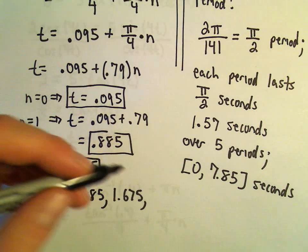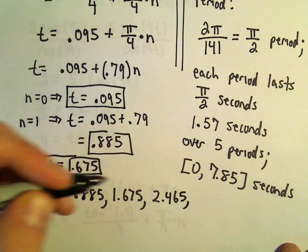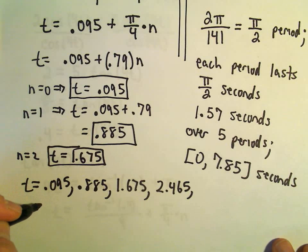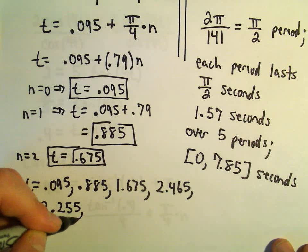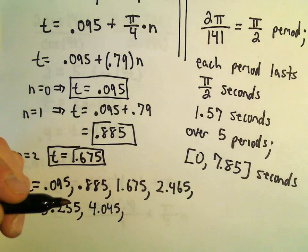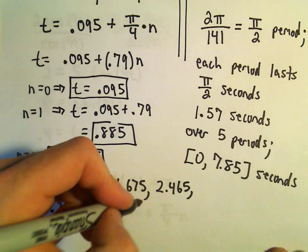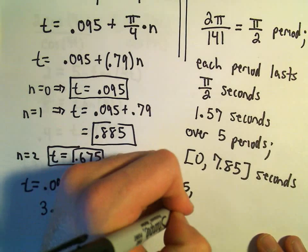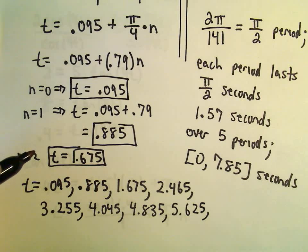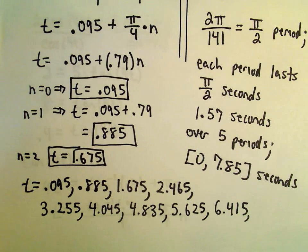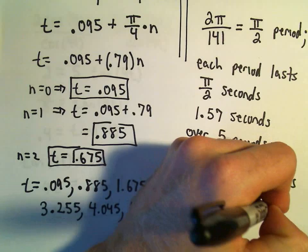So let's just start adding 0.79. I get 2.465 seconds will be another time where this object's at the equilibrium position. We'll add another multiple of 0.79, so 3.255. I'm going to add another multiple of 0.79: 4.045. We'll add another 0.79. Plus 0.79: 5.625. 0.79: 6.415. Let's add 0.79, that gives me 7.205.